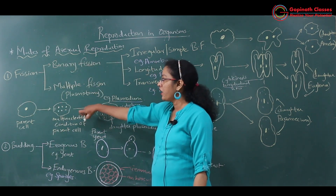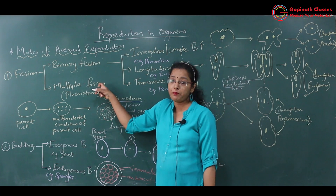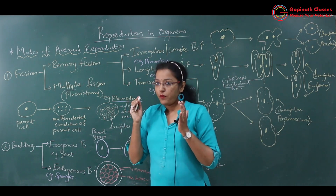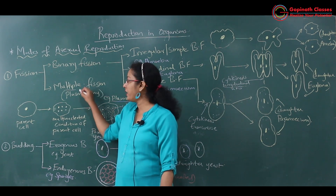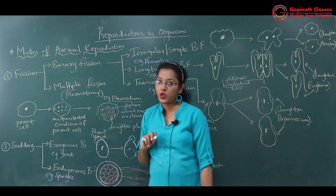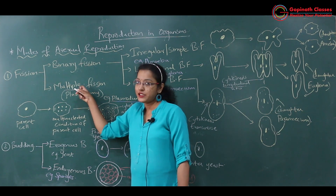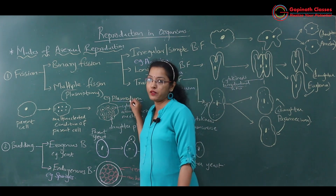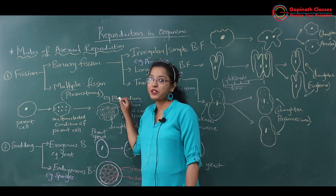Now let us study about the other type of fission, that is multiple fission. In multiple fission, many daughter organisms will be formed from the parent cell. Multiple fission is also known as plasmotomy. Plasmotomy, that is multiple fission, is seen in some of the protozoans — for example, plasmodium. Plasmodium is a protozoan which causes malaria.